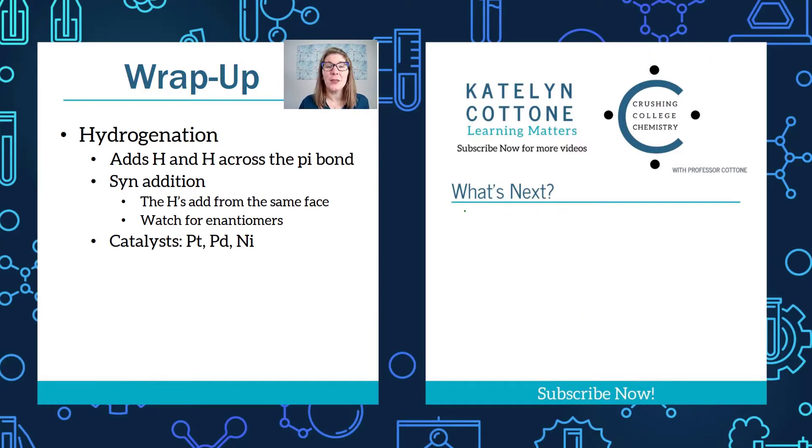Let's wrap up. In this video we looked at hydrogenation reactions. We said that H and H, so two H's, add across the pi bond in a format of syn addition. What that means is that your hydrogens are adding from the same face, so you have to watch out for the possibility of enantiomers. We also said that you could use a variety of catalysts including nickel, platinum, and palladium. Thanks so much for watching. This is Katelyn signing out.